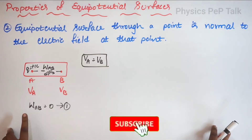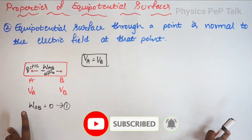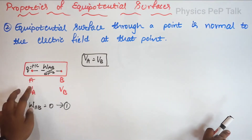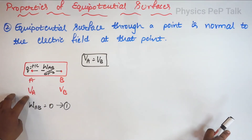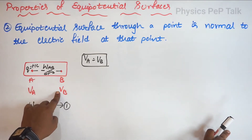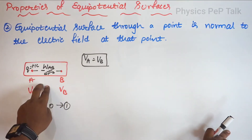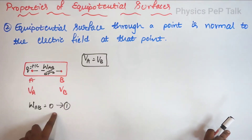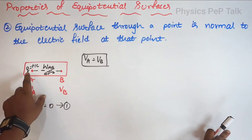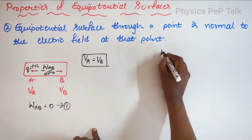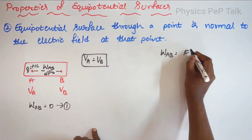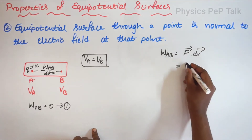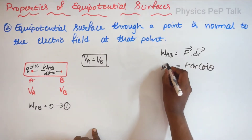Second property: an equipotential surface through a point is normal to the electric field at that point. Consider an equipotential surface with points A and B. V of A equals V of B, and from the first property, the work done in moving a charge from A to B is zero. If I consider the charge to be one coulomb, work done equals force times displacement — the dot product: F dr cos theta. Since charge is one coulomb, F equals E, so work done equals E dr cos theta.